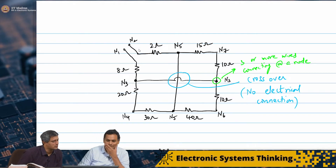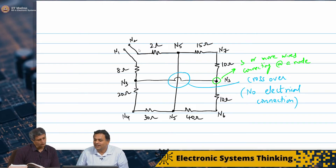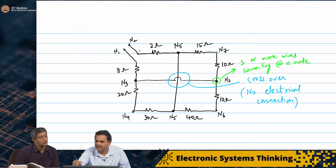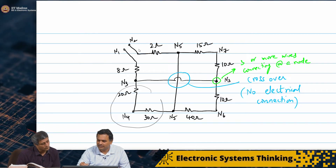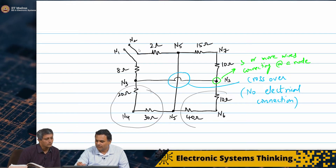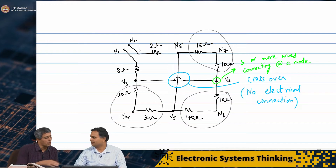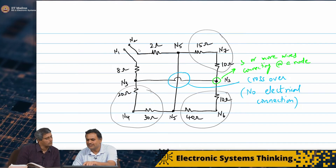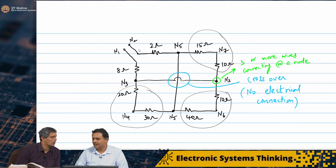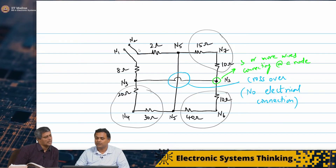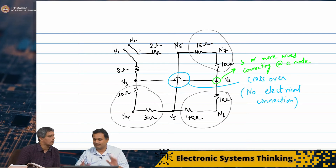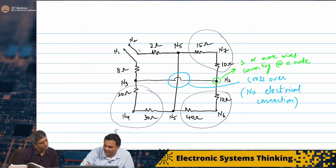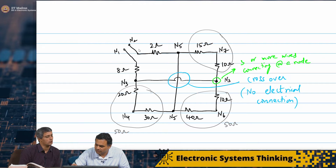How do we go about solving such a problem? We need to start identifying the simplest combinations. I see at least 3 simple ones. N4, N6, and N7 are each connected to only two resistors, so they can be replaced with equivalent series resistances. That gives: 30 + 20 = 50 ohms, 40 + 10 = 50 ohms, and 10 + 15 = 25 ohms.